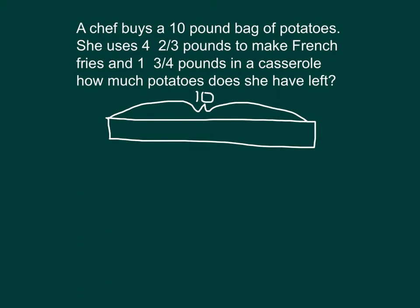We can go ahead and divide our bar model by looking at the other information in the problem. We have four and two-thirds pounds that she uses to make french fries — so out of this ten, almost half is used to make french fries, and that was four and two-thirds pounds. Now one and three-quarters pounds is used in a casserole, so we label that here with a C for casserole, and the amount is one and three-quarters pounds.